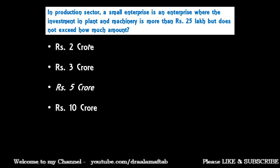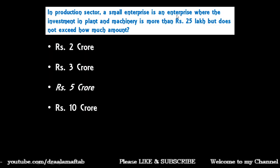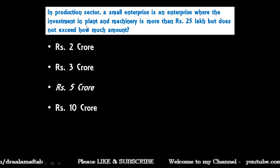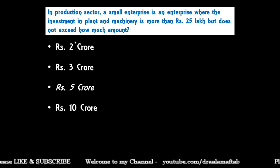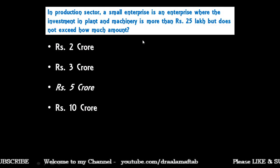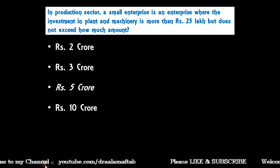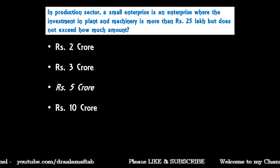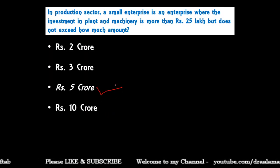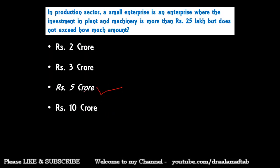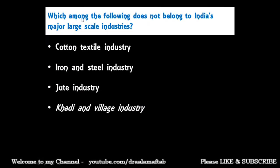In the production sector, a small enterprise — after micro enterprise — is an enterprise where the investment in plant and machinery is more than 25 lakh but does not exceed how much: rupees 2 crore, 3 crore, 5 crore, or 10 crore? The correct answer is rupees 5 crore — it should not exceed rupees 5 crore.